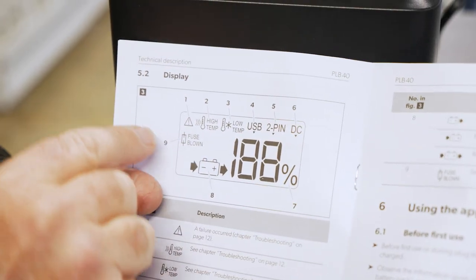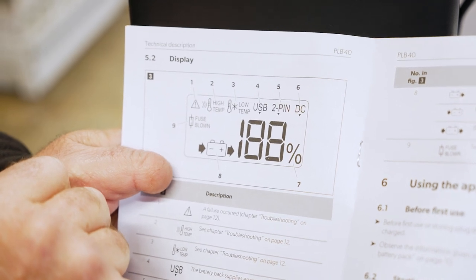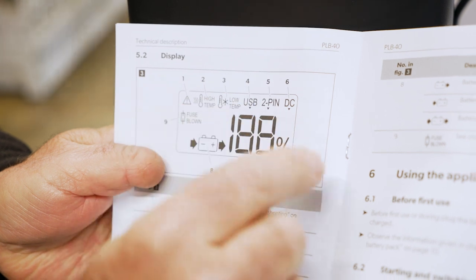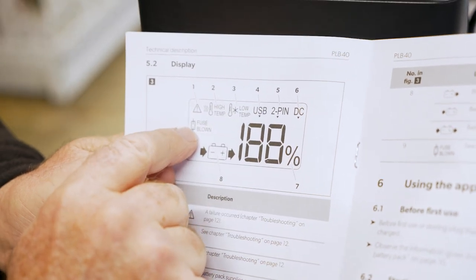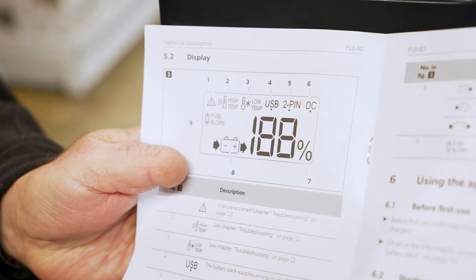First of all, you've got a little error symbol there. If there's a problem with it, you need to refer to your manual and see what the problem is. You've got temperature protection here if it's too high or too low, and an indicator if you've got a fuse blown. This gives you voltage protection as well as circuitry protection.